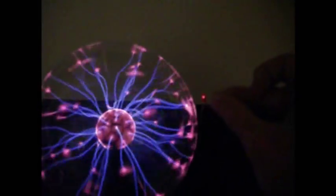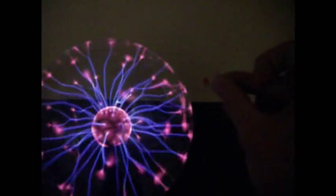The electric field can easily be investigated with a small neon bulb or light-emitting diode. Bring either of these near the plasma ball, and they will light up.